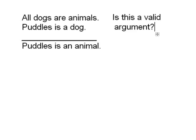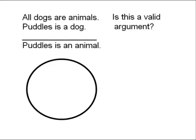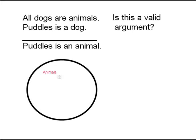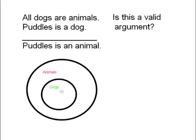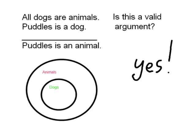This is a logical argument, but is it valid? Euler looked at this and said let's draw a circle, and inside the circle are animals. Now all dogs are animals. Puddles is a dog, so dogs belong in the circle of animals. So it seems reasonable to say that Puddles is an animal.